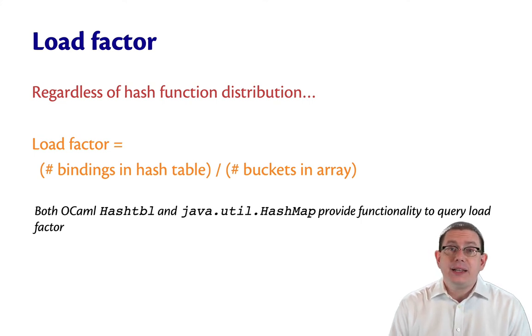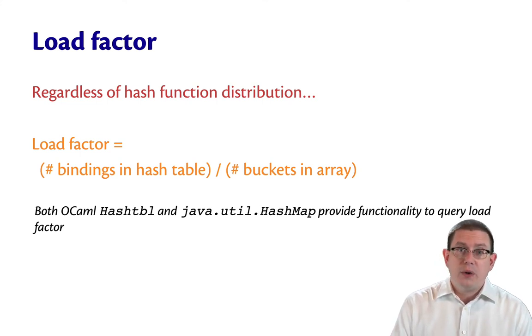And because that's such an important feature of the performance of hash tables, real-world standard library implementations give you the ability to query the load factor. So both OCaml's hash table and Java's hash map actually do provide functionality for you to ask a hash table what its current load factor is to see whether you're in any performance problems, or whether your hash function is behaving well or badly.